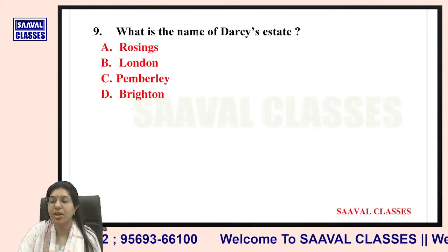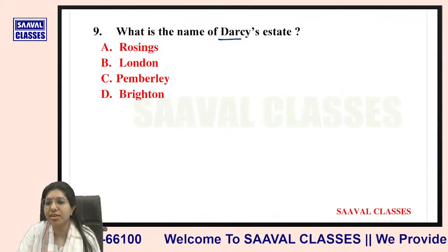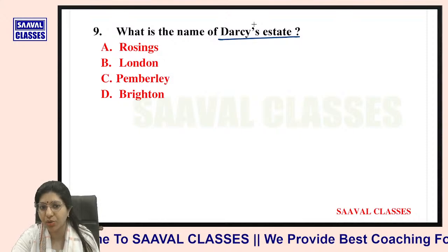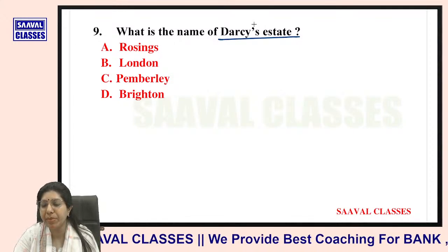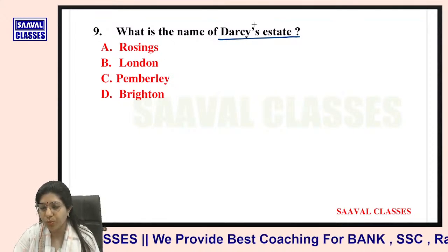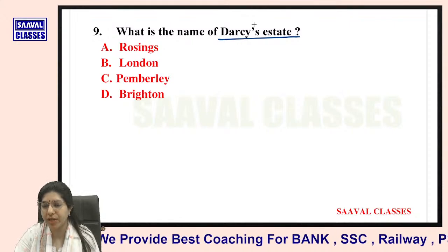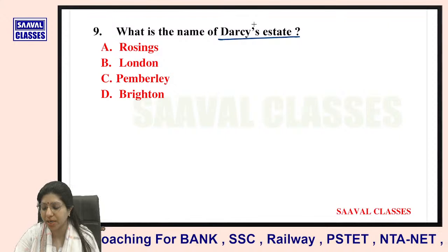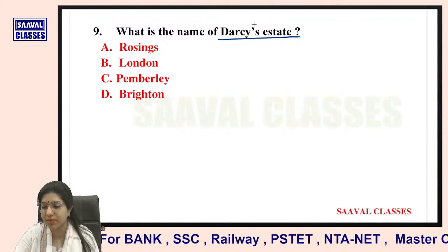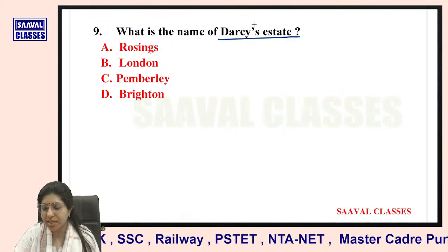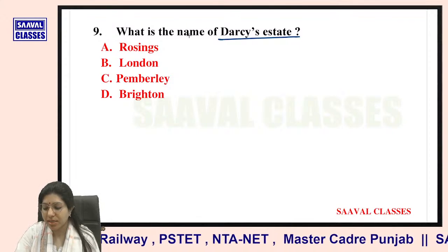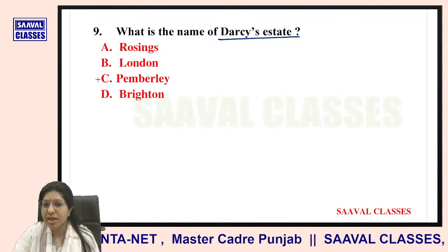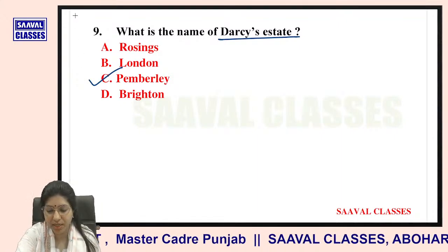Question number nine: What is the name of Darcy's estate? Options are Rosings, London, Pemberley, or Brighton. The answer is the Pemberley estate — very right.